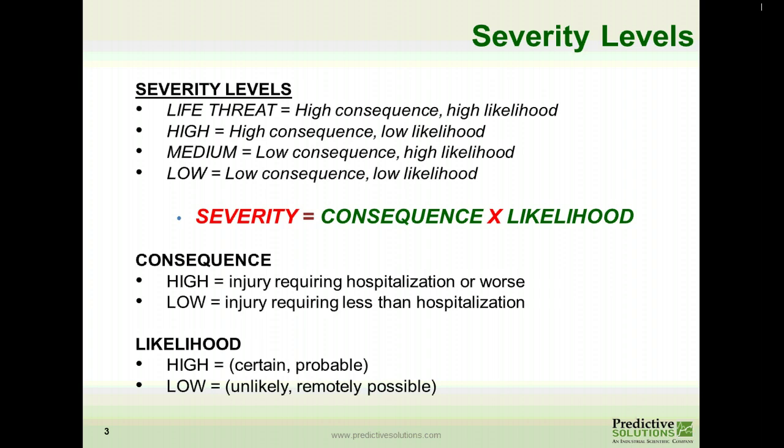There are four choices for severity within Safety Net: low, medium, high, and life threat. Some companies choose not to use all four, but all four are available.